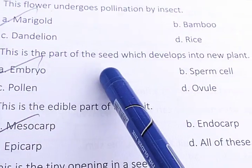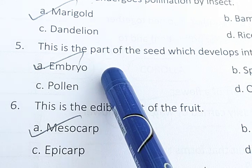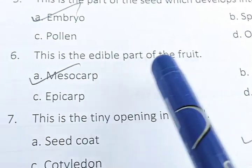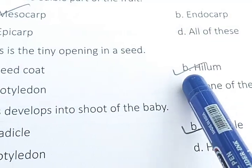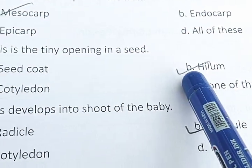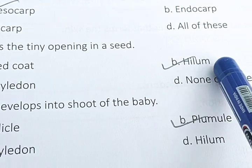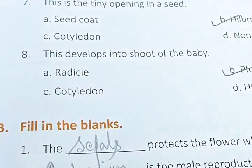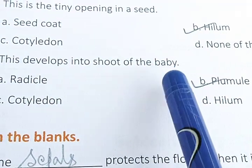This is the part of the seed which develops into a new plant — answer: embryo. This is the edible part of the fruit — answer: mesocarp. This is the tiny opening in the seed — that is the hilum. Hilum is a tiny opening present in the seed coat which actually helps to absorb water.